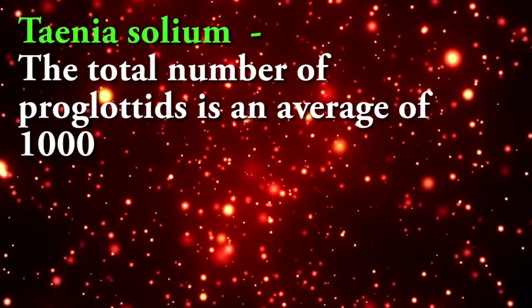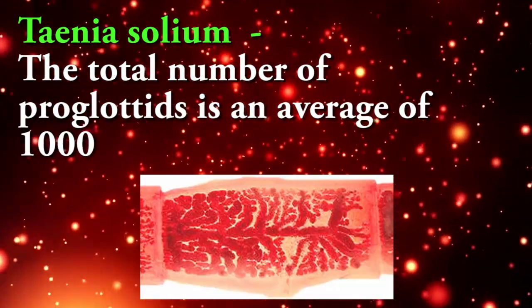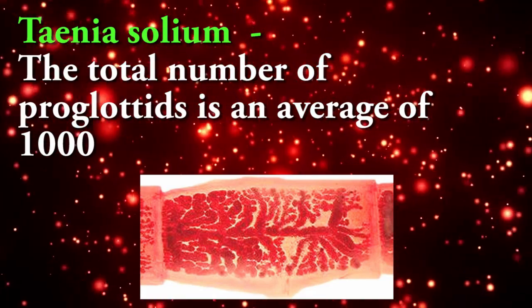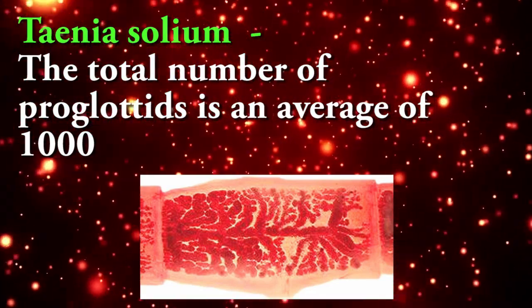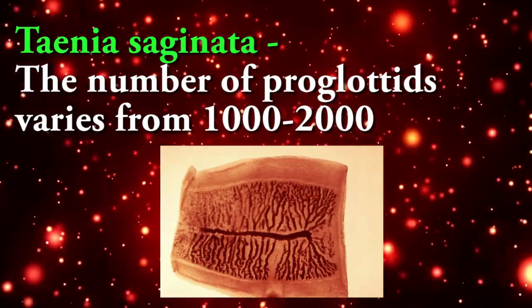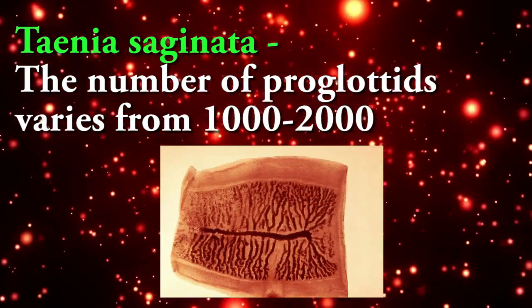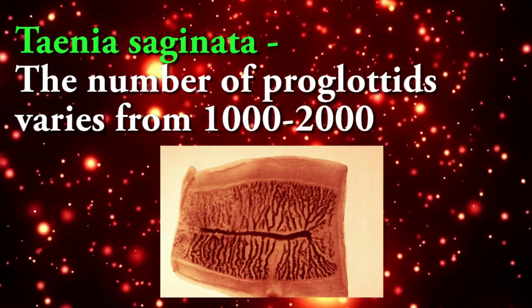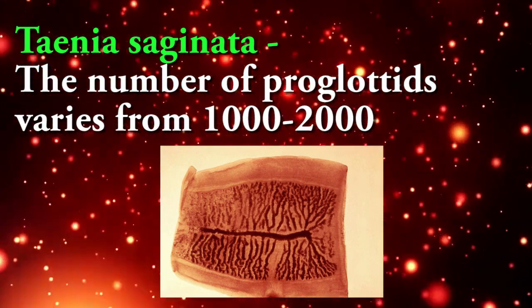Proglotids: Taenia solium has a total number of proglotids averaging about 1000. Taenia saginata has a number of proglotids varying from 1000 to 2000.